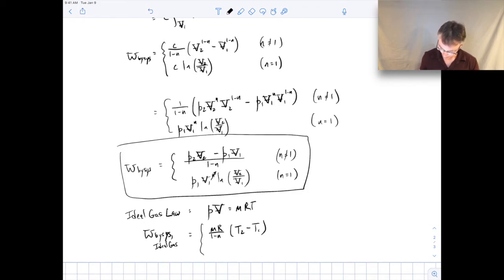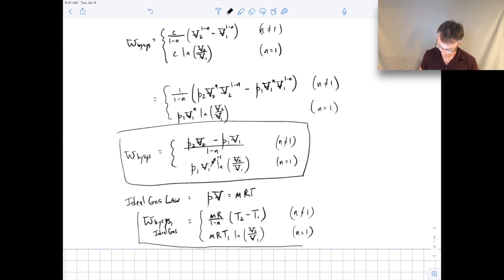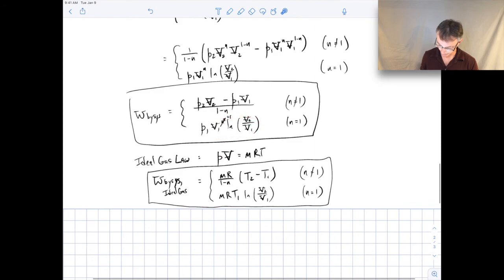In this bottom expression N here would just be equal to 1 in this case. So this would just be MRT1 times natural log of, we'll just leave it as V2 over V1. So this would be the expression you get if you're dealing specifically with an ideal gas. The top just becomes a little bit easier with T2 minus T1 in that case. And then the bottom expression doesn't look all that different from the expression here. It's just I wrote in for the PV term here just using ideal gas law.